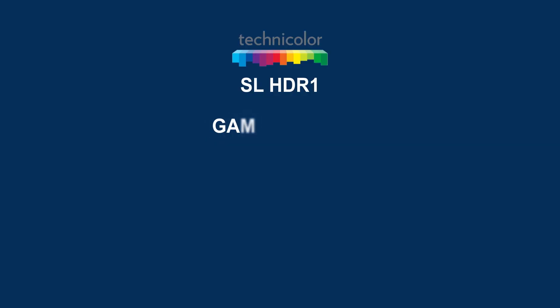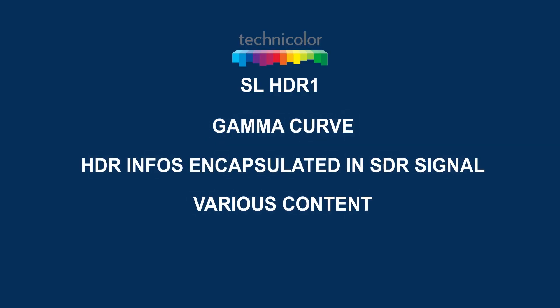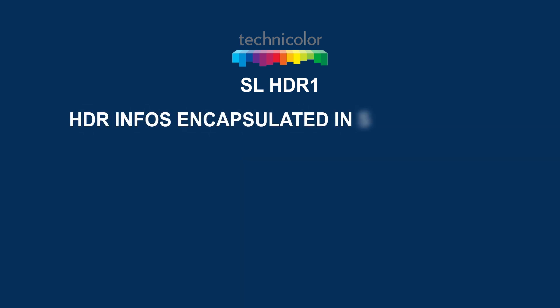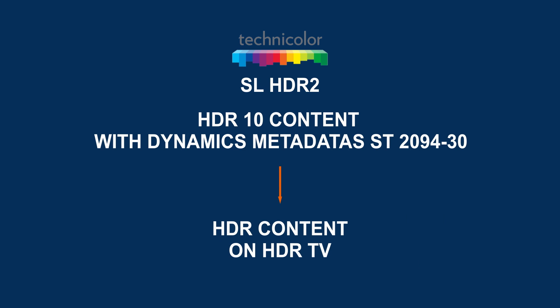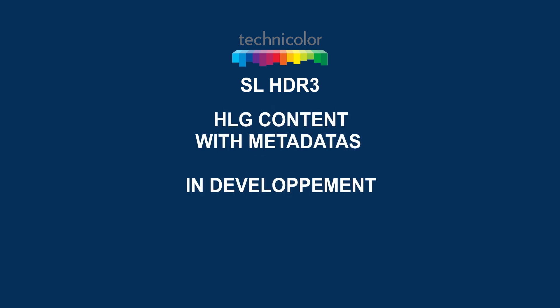SLHDR was developed by Technicolor, along with Philips, Cable Labs and Microelectronics. There are three types of SLHDR. SLHDR1 is an SDR content with information to reconstruct an HDR signal — if you send it to an SDR TV set, you get SDR; if you send it to an HDR TV, it rebuilds the HDR signal. SLHDR2 is a pure HDR signal associated with dynamic metadata, made to be displayed on an HDR TV. And SLHDR3, based on HLG content associated with metadata, is still in development.